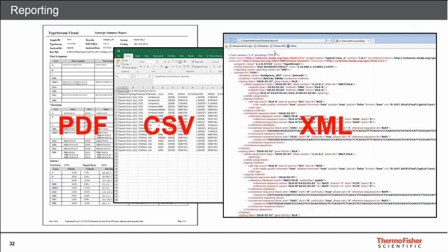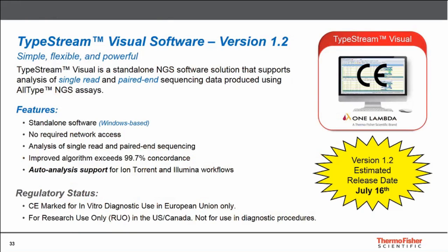Before moving to part two, there's one additional feature to highlight: Auto Analysis Support for IonTorrent and Illumina Workflows. This is a new feature available to all users of TypeStream Visual in version 1.2, expected to release next week on Monday July 16th. This Auto Analysis functionality allows the user — regardless of whether they're using the IonTorrent S5 or Illumina MiSeq platform — to allow TypeStream Visual to auto-detect completion of a sequencing run and then initiate auto-creation and processing of a session.